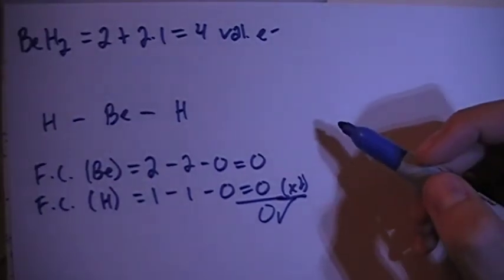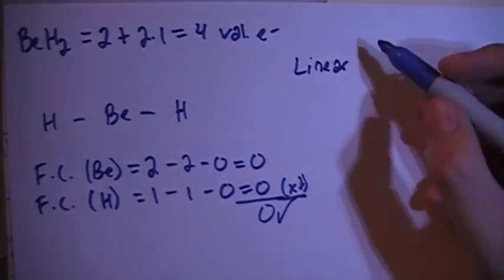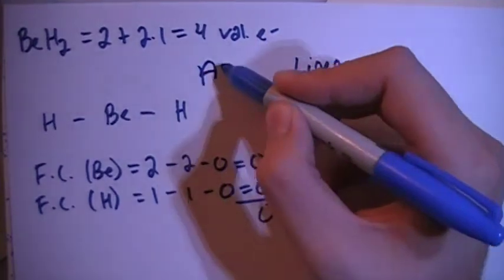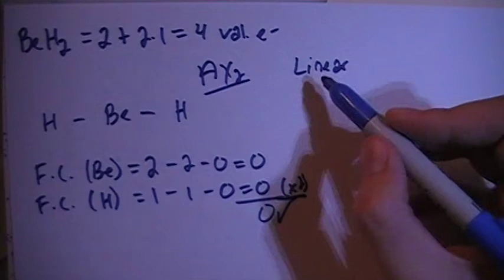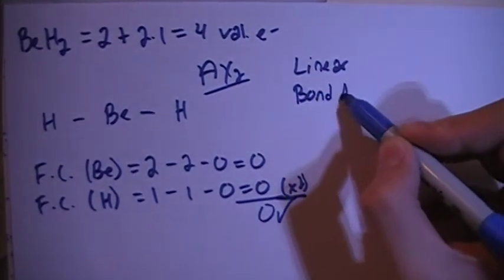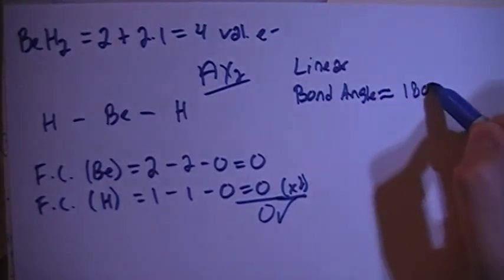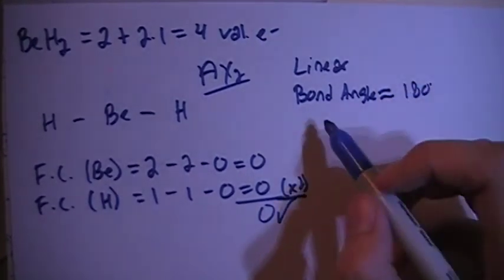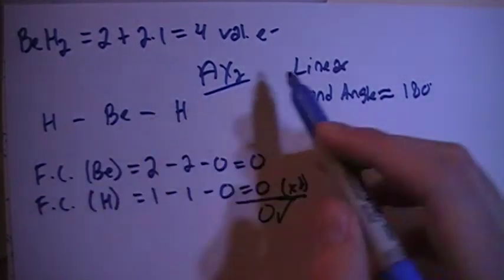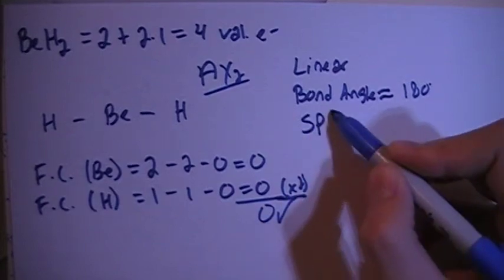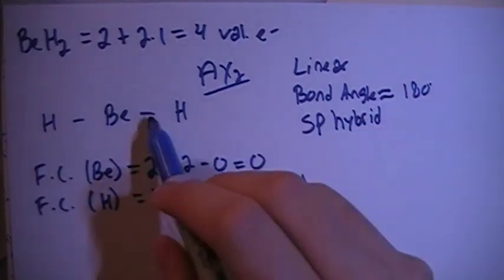This is going to be a linear shape because it's an AX2 structure. In a linear shape, the bond angle is approximately equal to 180 degrees. In this case, looking at the central atom beryllium, there's one, two bonding sites, which means SP hybrid, one S orbital, one P orbital, two total orbitals, two bonding sites.